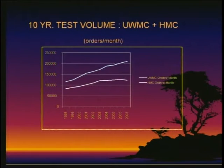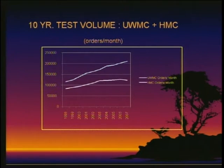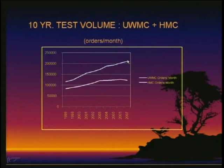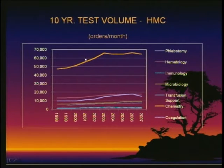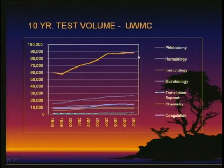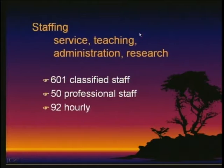Mapping out test volume over the last 10 years: the graphs show the number of tests ordered. Keep in mind that many tests we do are grouped — batteries count as one order — so we're putting out millions of results. Between the two hospitals, and not including our outreach, we're taking in about 300,000 or more orders per month on average, and we've almost doubled in the last 10 years. There's been a slight drop-off at Harborview this last year, but with the new ICU beds and other additions that should pick up again.